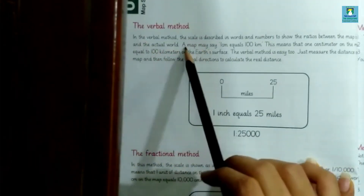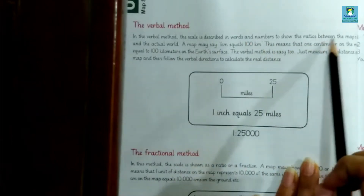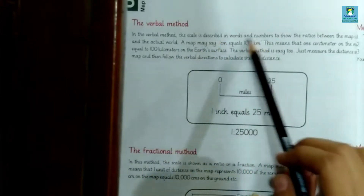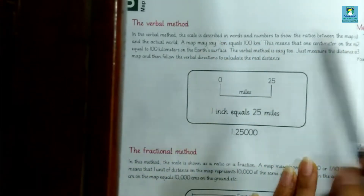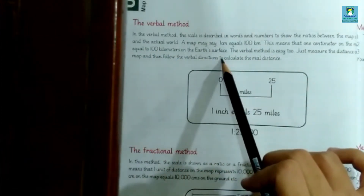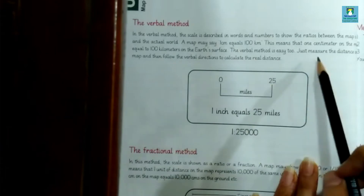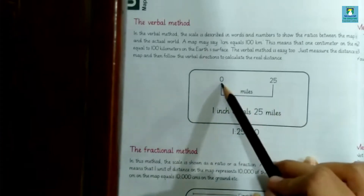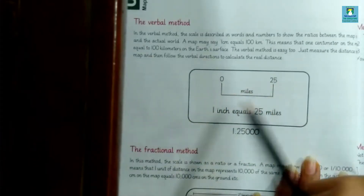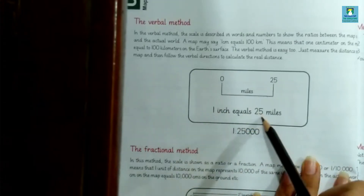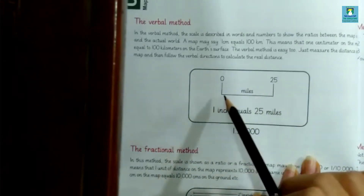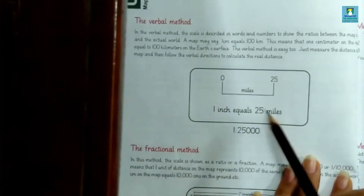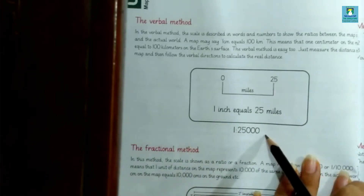Next is the verbal method. In this method the scale is described in words and numbers to show the ratio between the map and the actual world. A map may say '1 cm equals 100 km,' meaning 1 cm on the map equals 100 km on the Earth's surface. For example, if it is written that 1 inch equals 25 miles, then 2 inches on the map represents 50 miles in real life.